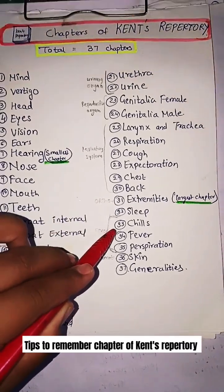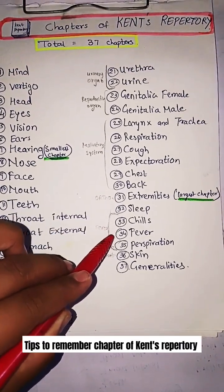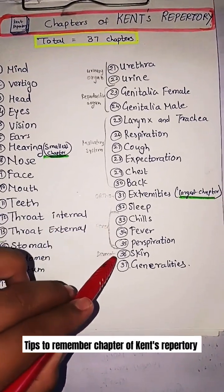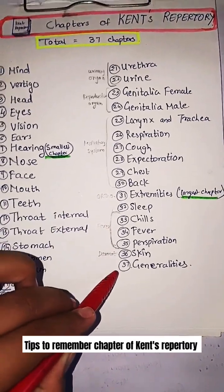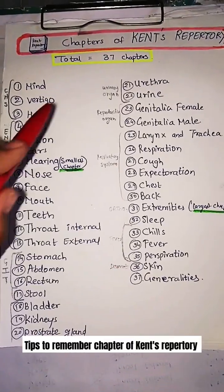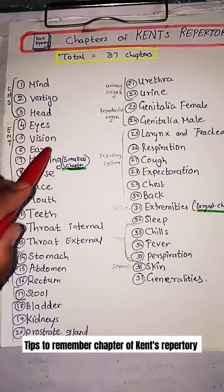Extremities, Sleep, Chills, Fever, Perspiration, Skin, and Generalities. All are arranged in a systemic form.